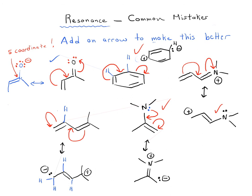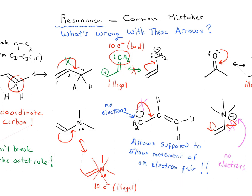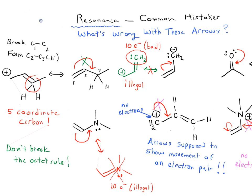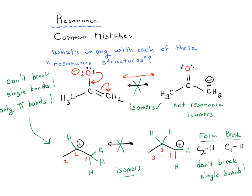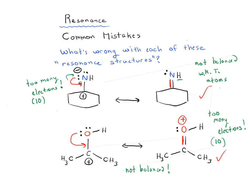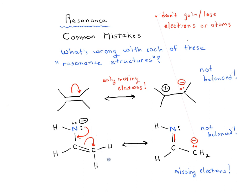The key takeaways: keep an eye out for breaking the octet rule and avoid it. Avoid drawing arrows with their tail on a positive charge — there are no electrons there. Don't move single bonds around; only break or form double bonds. Keep track of the number of electrons, and don't add or subtract atoms or hydrogens. As long as you keep all those things in mind, you'll be good at drawing resonance forms. It's an important skill in organic chemistry, and with practice it becomes second nature.